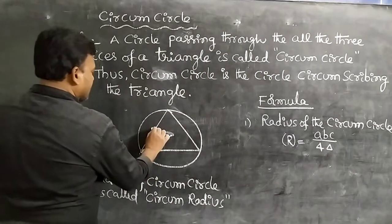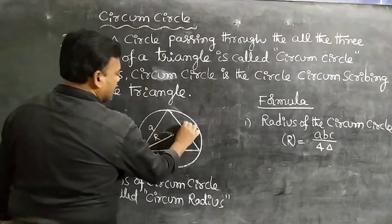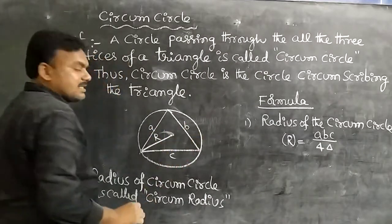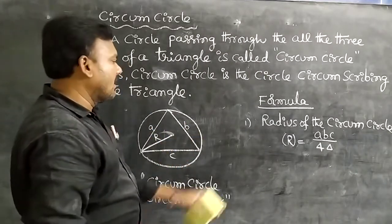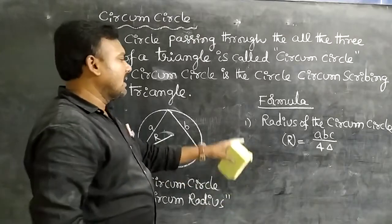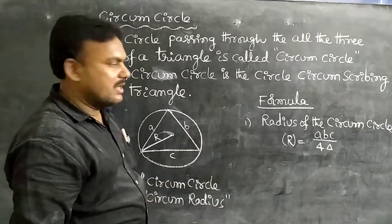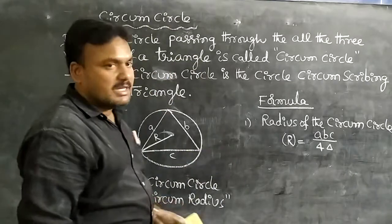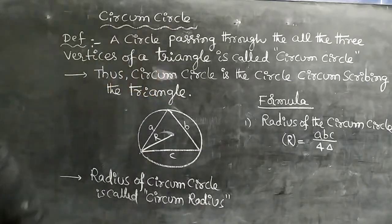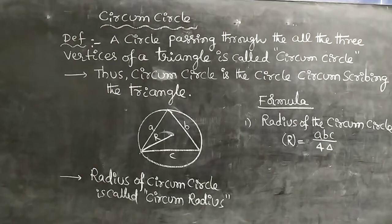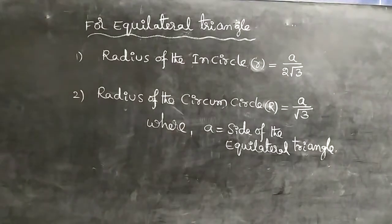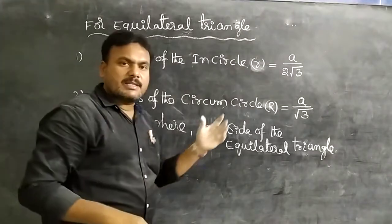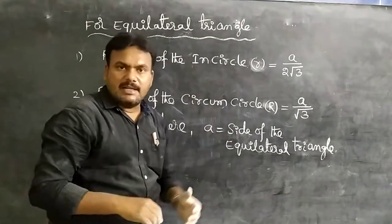Here A, B, and C are the sides of the scalene triangle, and Δ is the area of the triangle. This is the formula for the circumcircle. Before that we discussed the scalene triangle, but now we discuss the equilateral triangle.